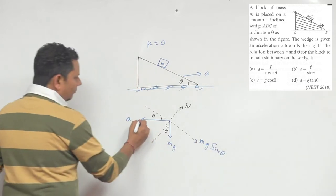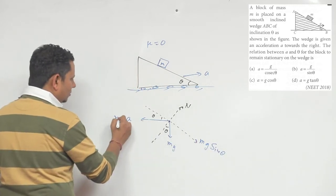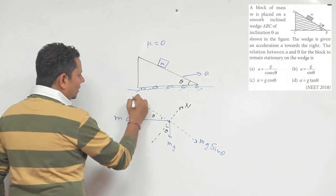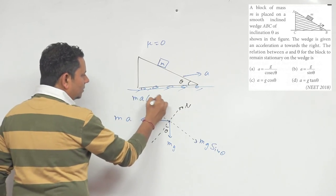And this pseudo force has a component along the incline. So we can say that it's ma cos theta.